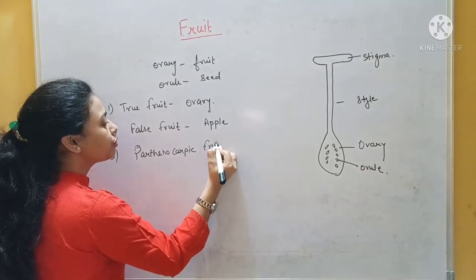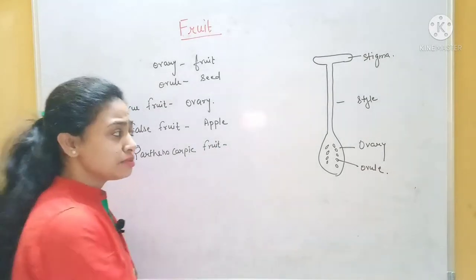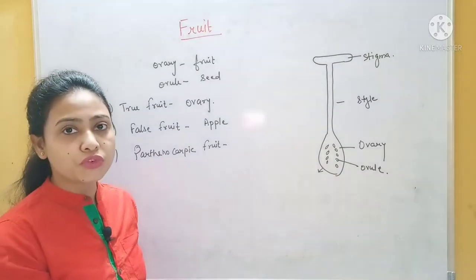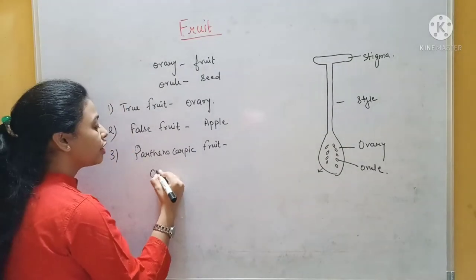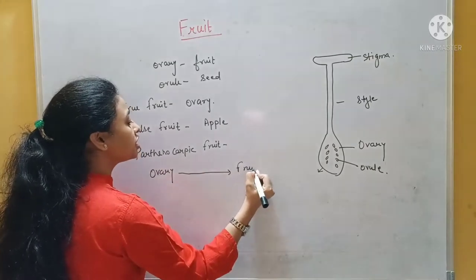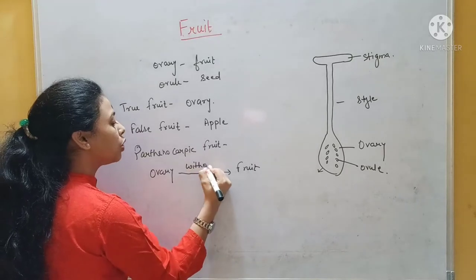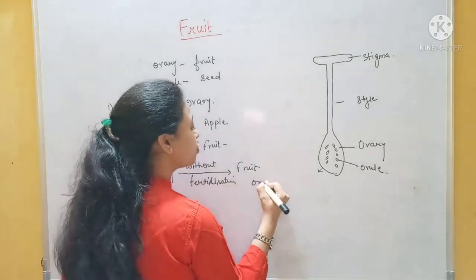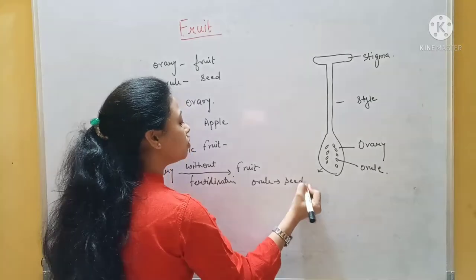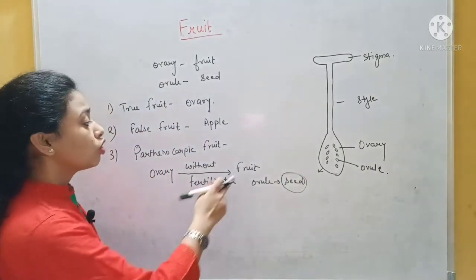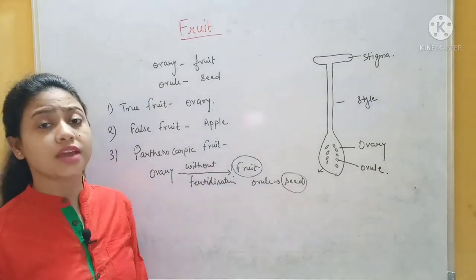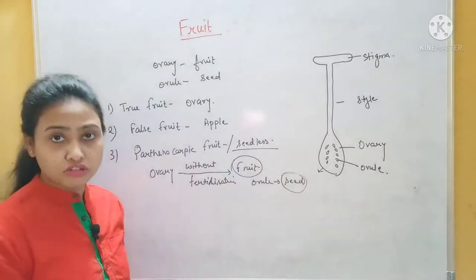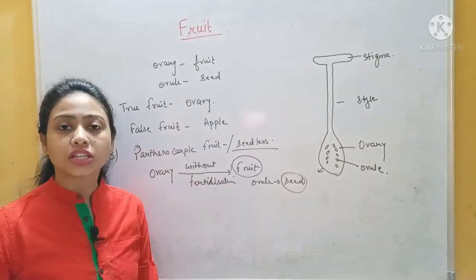And the third one is called the parthenocarpic fruit. What is this fruit? This is actually a true fruit — the fruit is made from the ovary. But what happens here? After the ovary, instead of fertilization occurring first, the ovary is converted directly into fruit. That means there is no fertilization. Without fertilization, it is converted directly into fruit. Because there is no fertilization, the ovule is not converted into a seed. That means the fruit is seedless. This process is known as parthenogenesis and the fruit is called a parthenocarpic fruit.